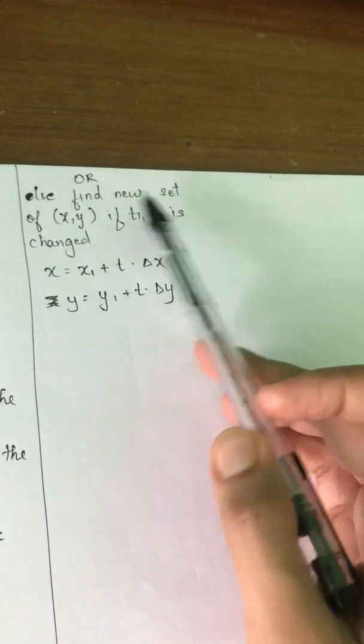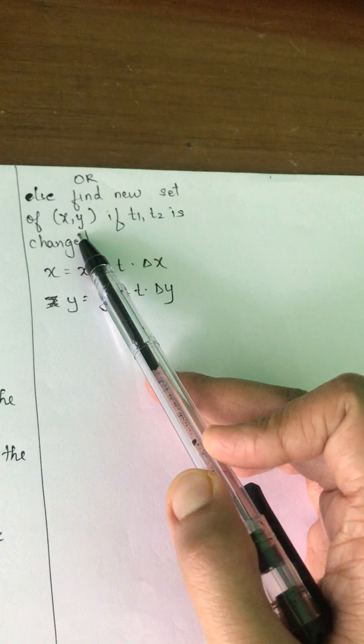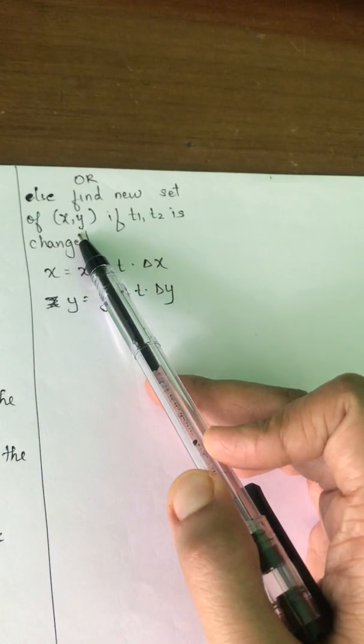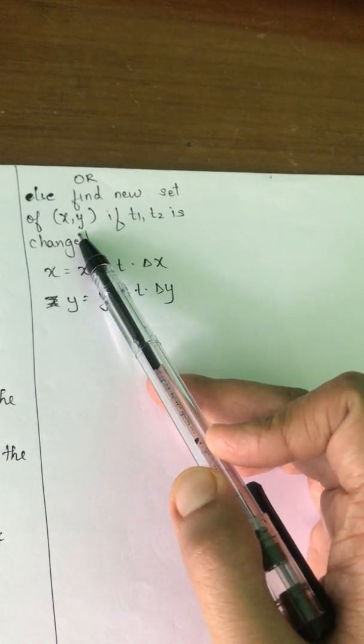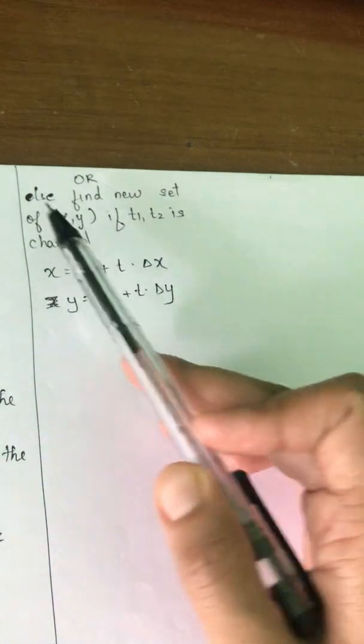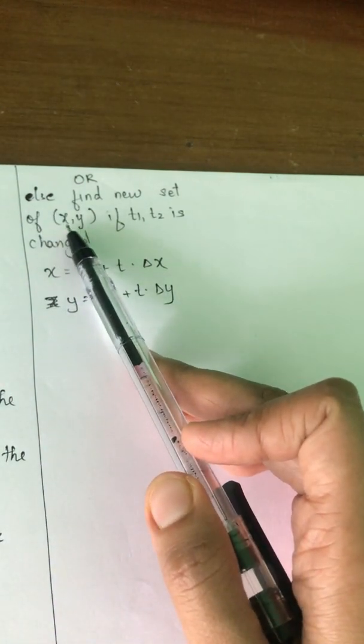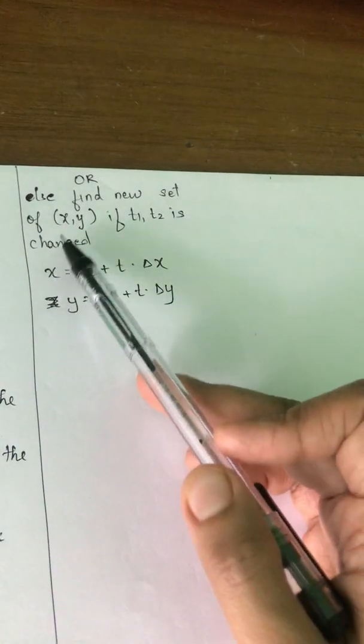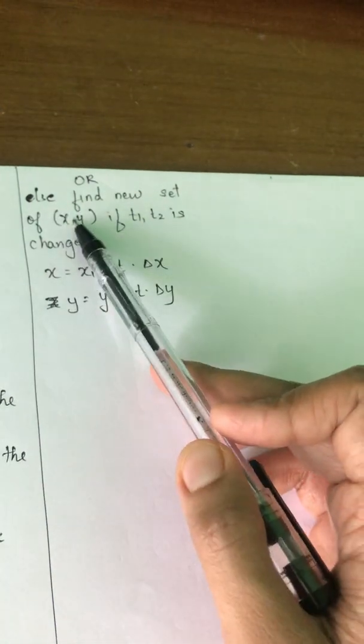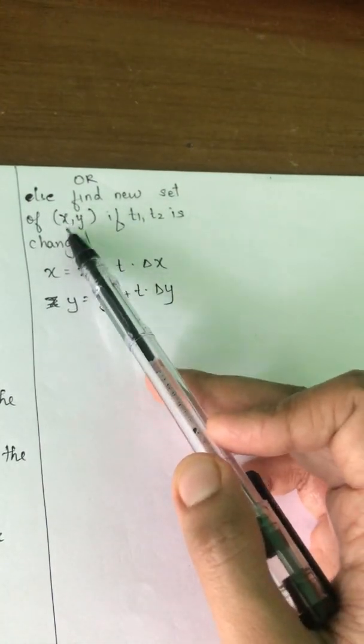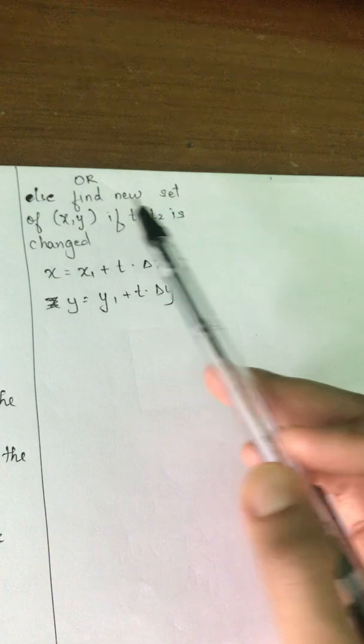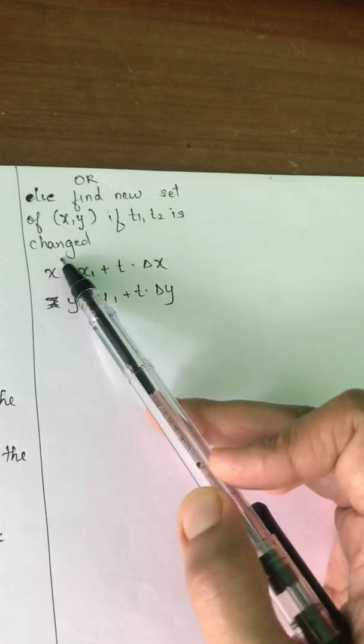Or else, find a new set of x, y. If the line is not completely outside, that means it is partially inside and partially outside, so we need to clip it. That is why, in order to clip it, we will be given a window size. According to that, the new parameters—the new endpoint of the line—has to be calculated if t1 and t2 is changed.